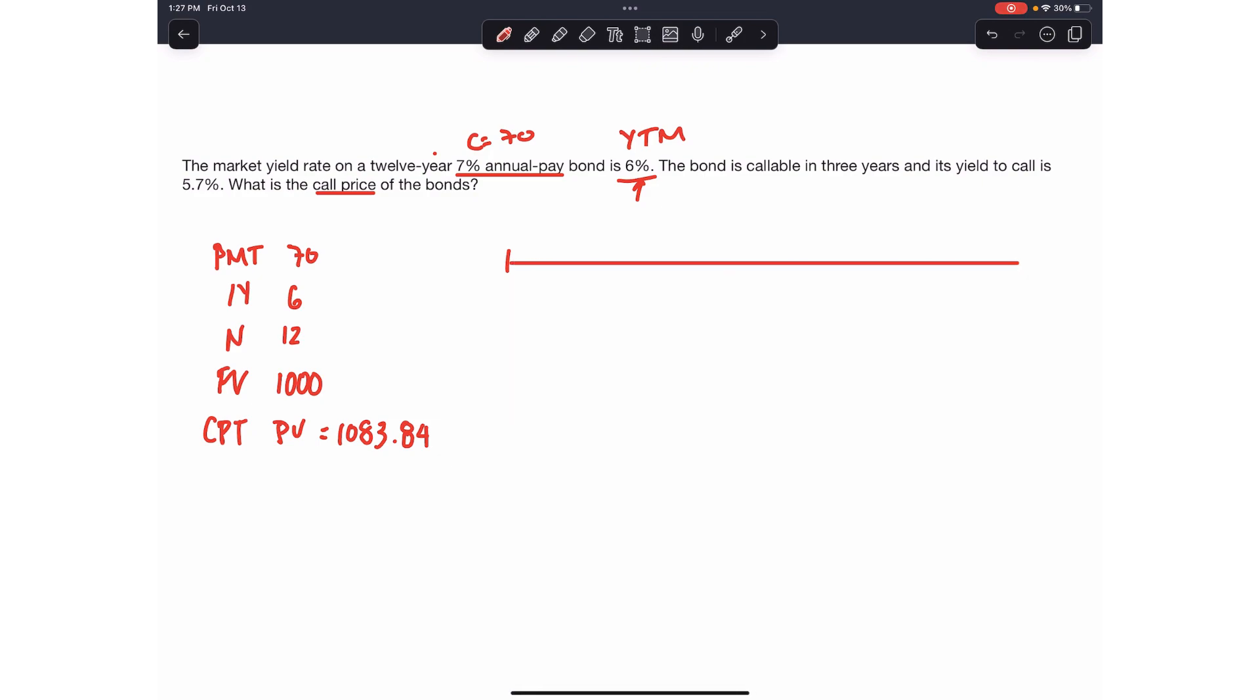So if you were to look at this on a timeline, today at time zero, this bond would cost you $1,083.84, right? So you would pay this. Each year, you would collect a $70 coupon until the last year, and then you would get back your $1,000.